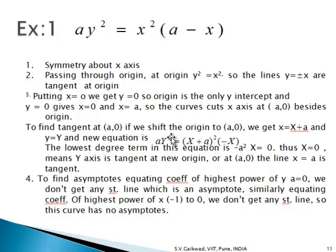To find the tangent at (a, 0), shift the origin there using x = X + a, y = Y. Substituting gives aY² = (X + a)²(−X); the lowest degree term is −a²X = 0, so X = 0, meaning the y-axis is the tangent at the new origin, i.e., the line x = a is tangent at (a, 0). For asymptotes: the coefficient of y² is a, and setting a = 0 gives no line, so no asymptote parallel to the x-axis. The coefficient of the highest power of x (which is x³) is −1; setting −1 = 0 gives no line, so there are no asymptotes.